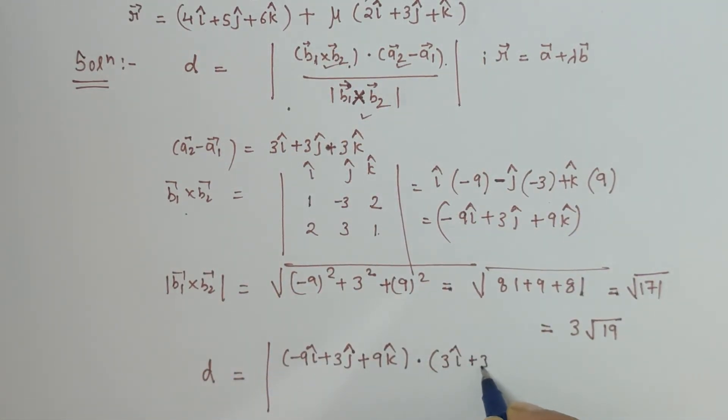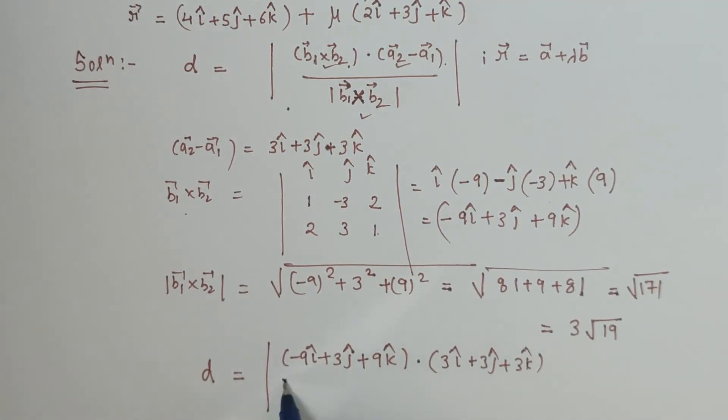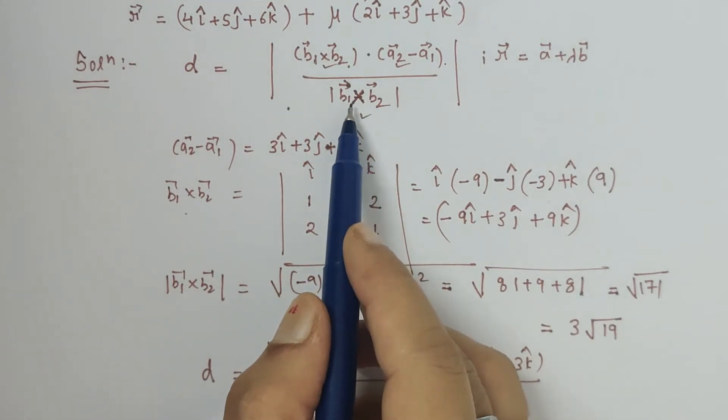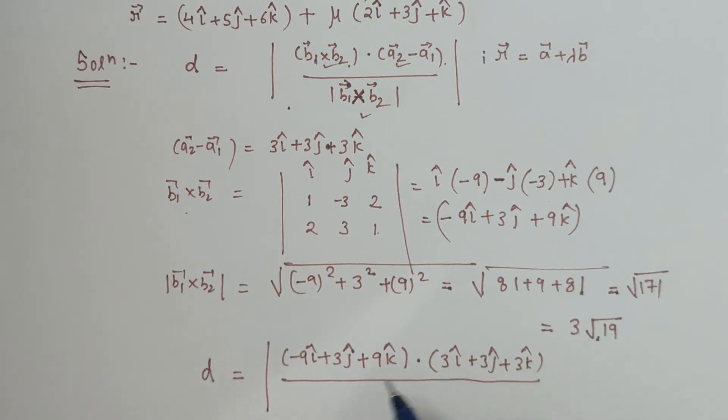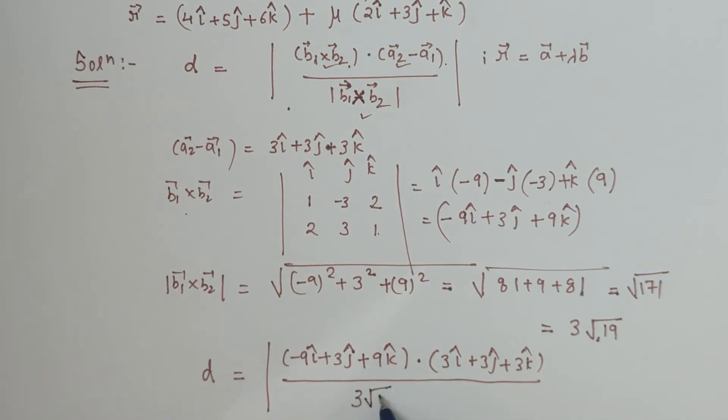Upon the magnitude of b1 cross b2 which is already there, 3 under root 19. So let us put it as it is, 3 under root 19.